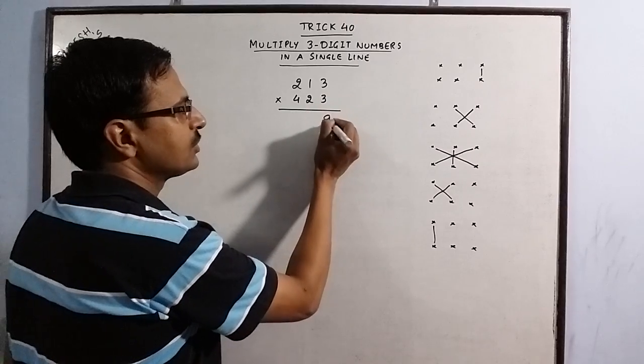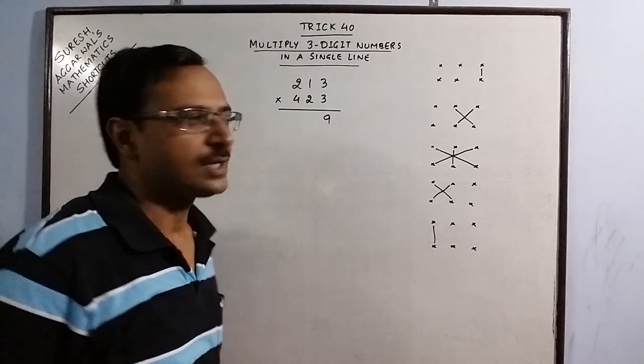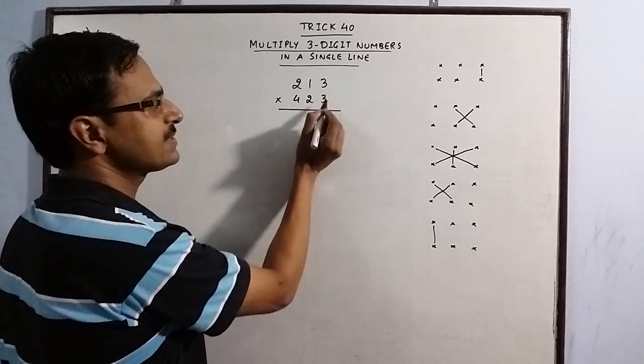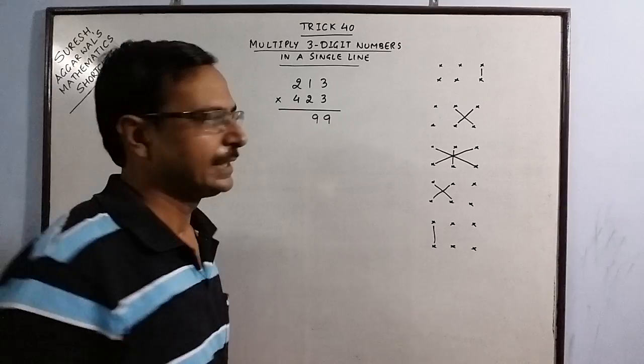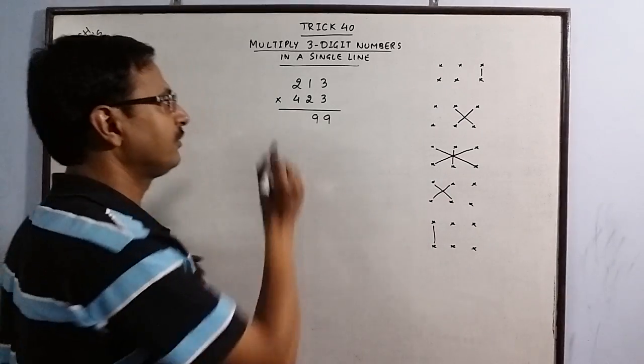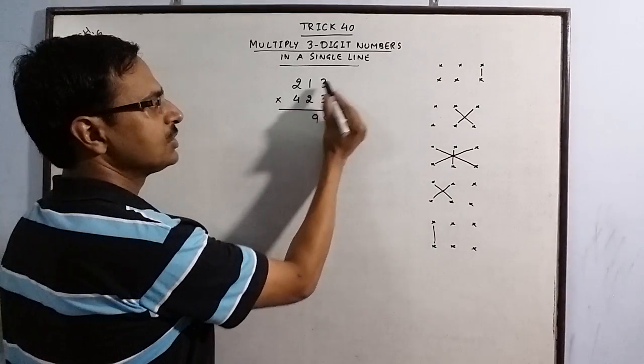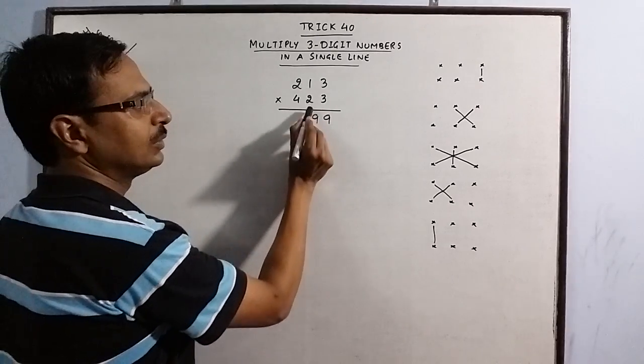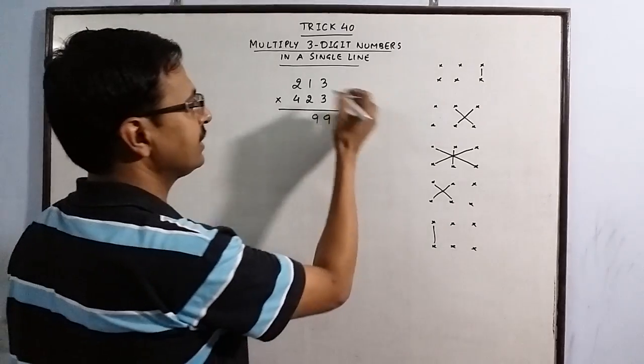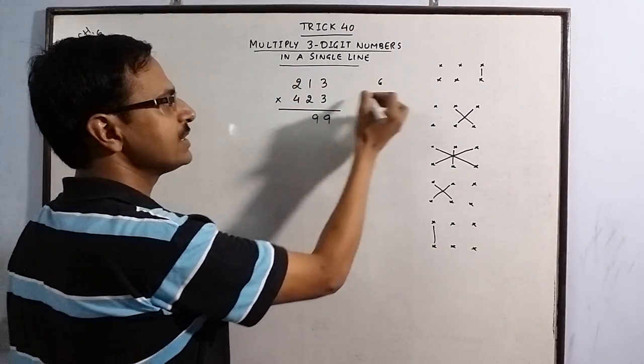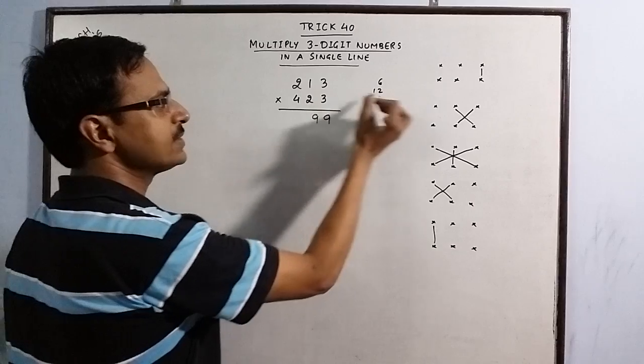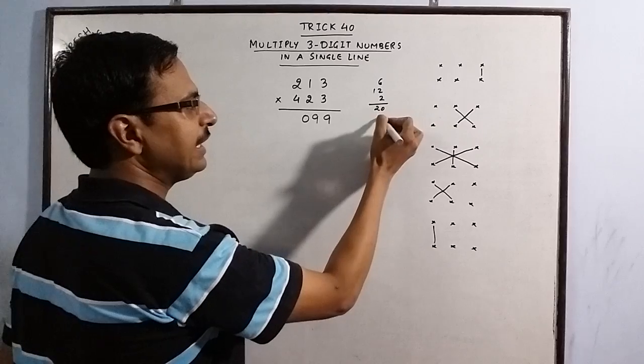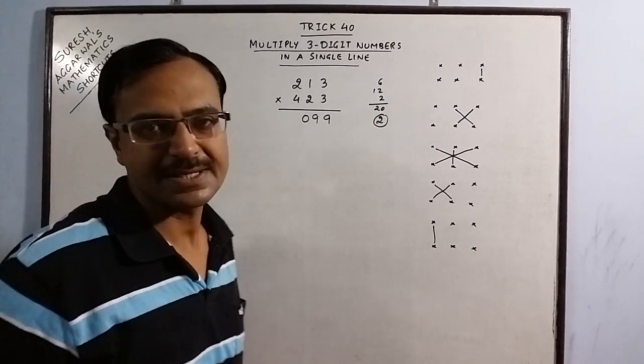3 into 3 is 9 so first step is done. The second step cross multiply so 3 and 6, 6 plus 3 is 9 so we get the second digit. Then the third step first and last 6, 12, 12 plus 6 is 18 and 2, 20. So we have three numbers here, 2×3 the 6, 4×3 the 12, and 2×1 the 2 which add up to 20. So we get 0 here and we retain this 2 carry forward it to the next digit.